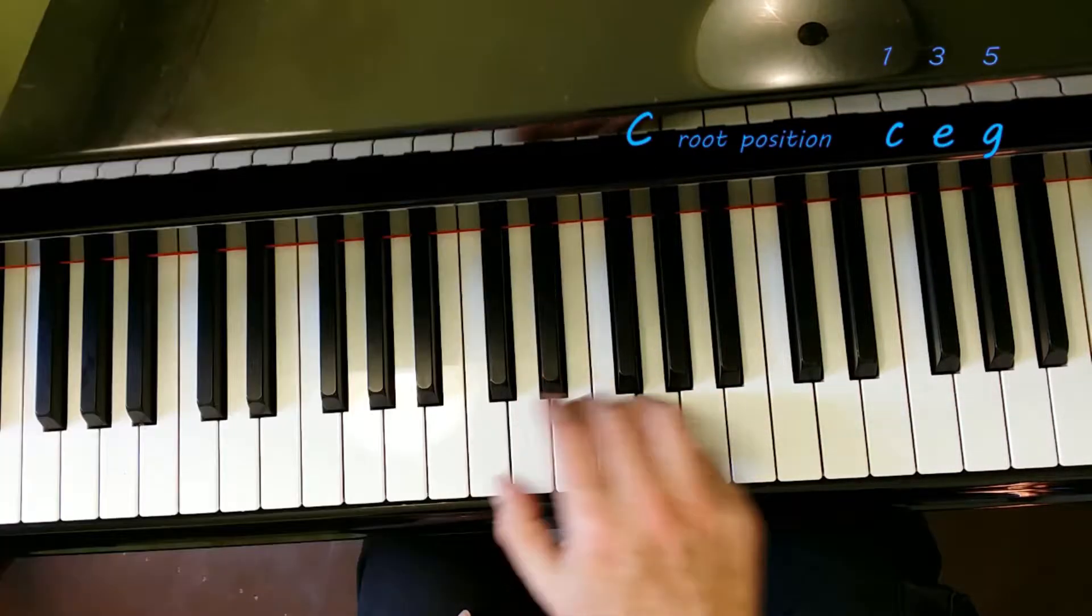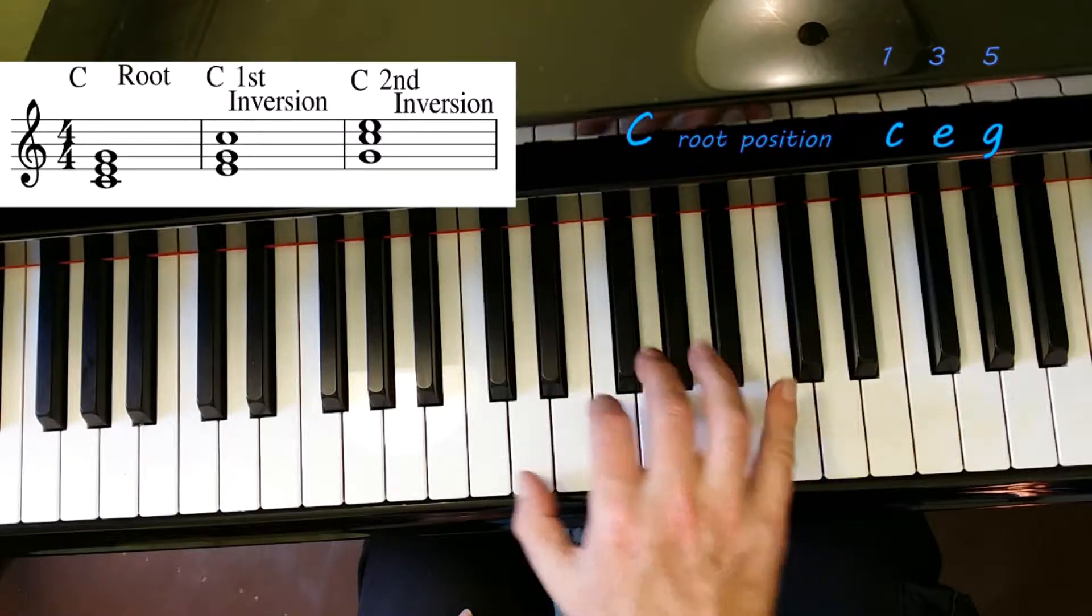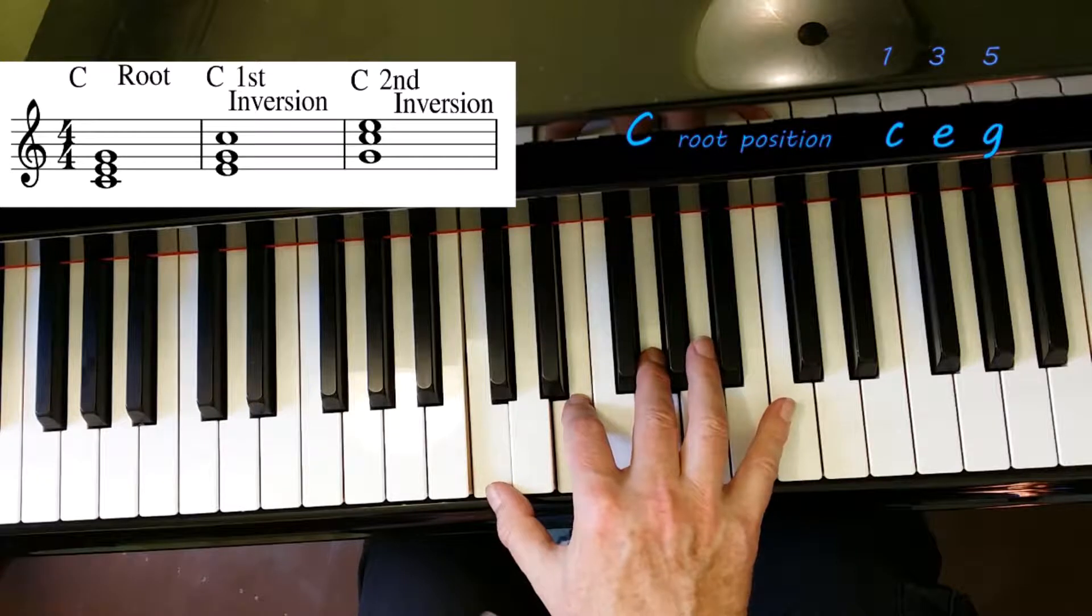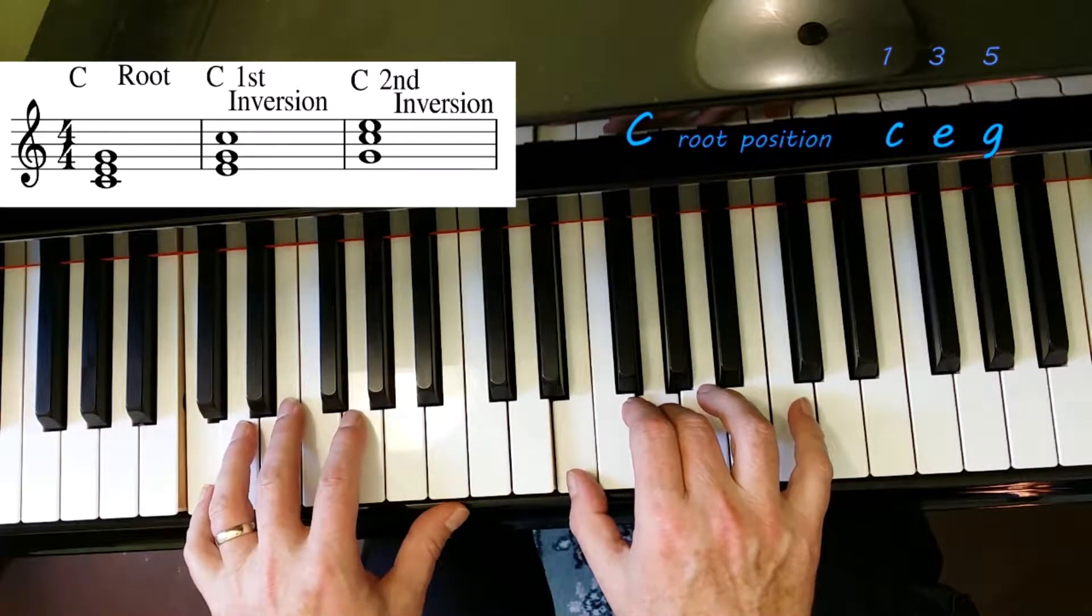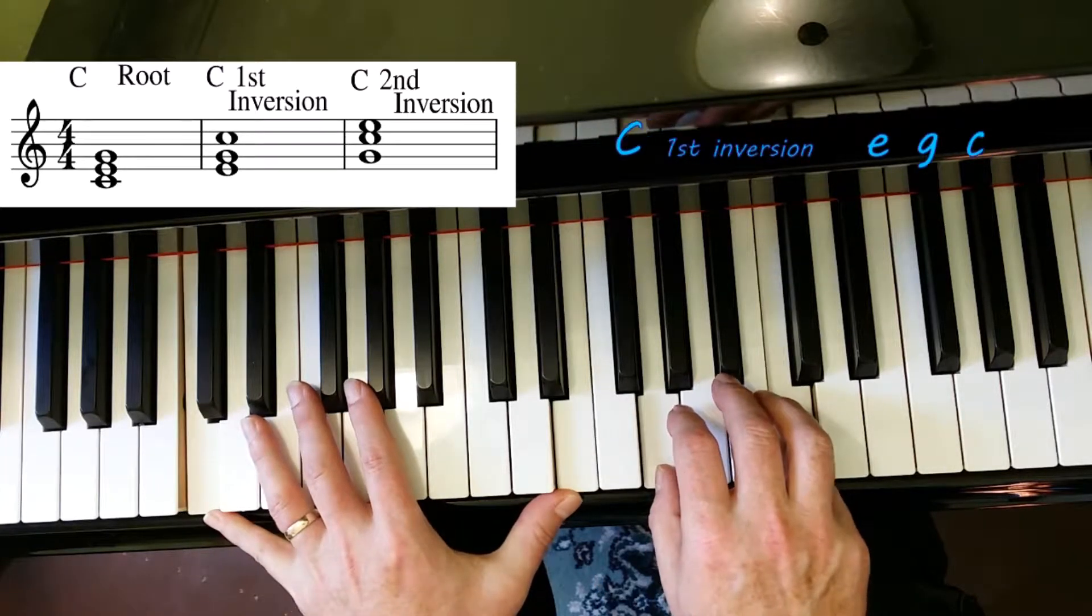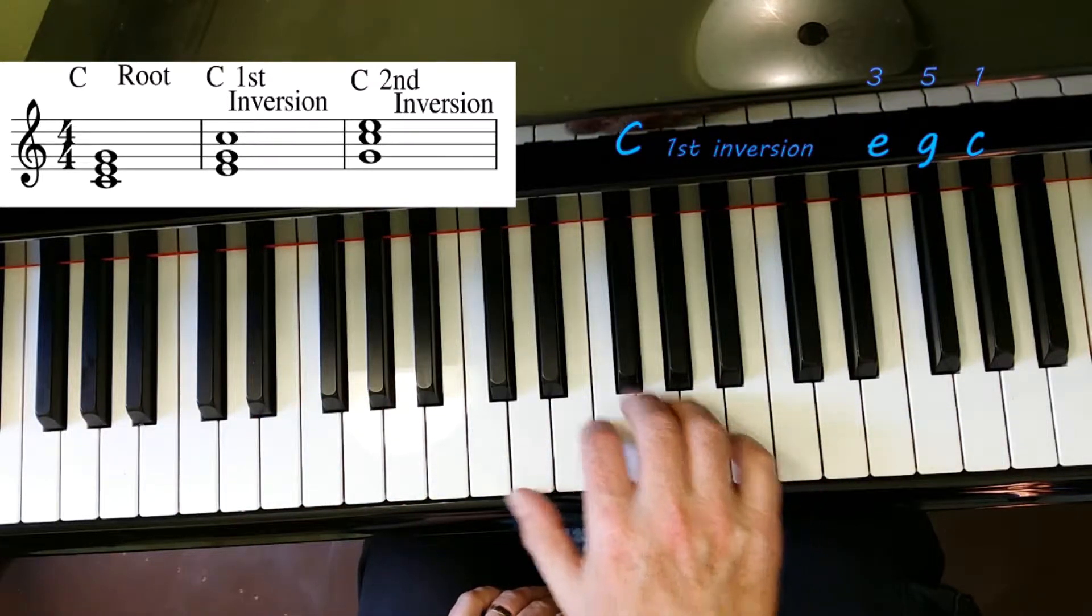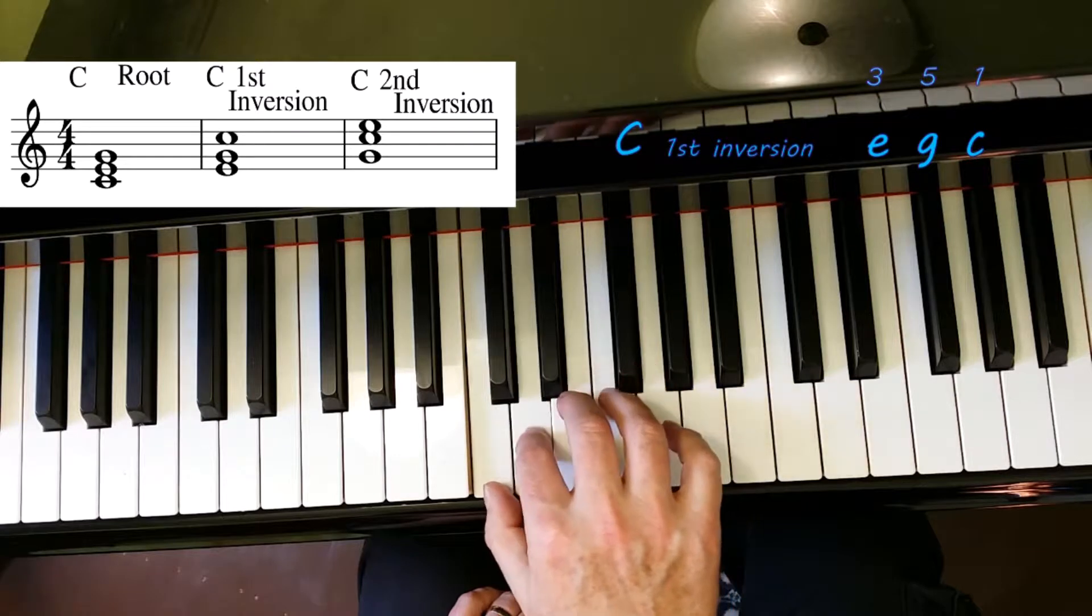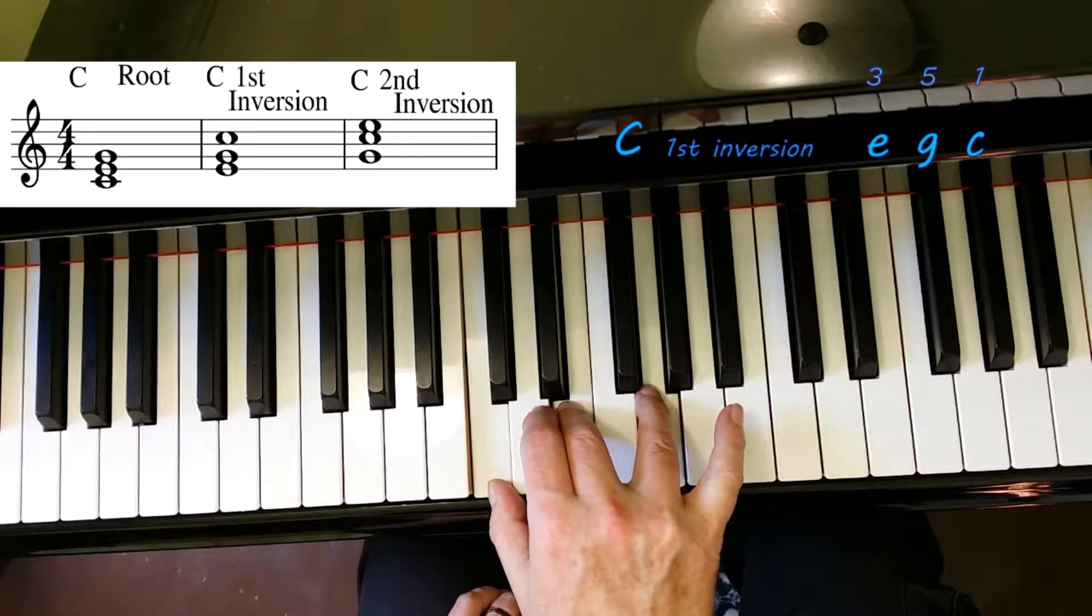We need some variation, and we get that through the inversions. You can literally take these notes—one, three, and five of your major scale—and you can play them in different places. We're talking about a closed position voicing, so we've got one, three, five right next to each other.